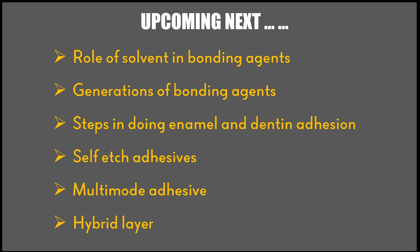In coming presentations, we will see the role of different solvents like water, acetone, and alcohol added in bonding agents, and why leaving the bottle open leads to evaporation of the solvent and deterioration of bond strength. We will also cover all generations of dentine bonding agents from the first to the latest, the steps in enamel and dentine adhesion including selective etching, etch-and-rinse, self-etch, and multi-mode procedures, and at a microscopic level what happens during and after application of bonding agents — the hybrid layer. Until then, have a nice day. Thank you for watching.